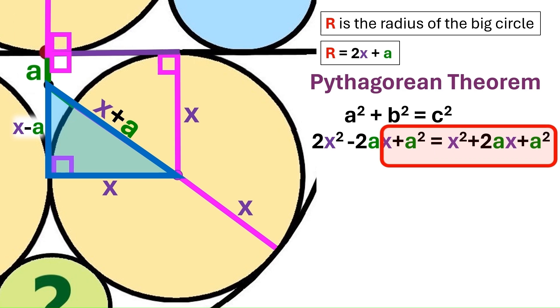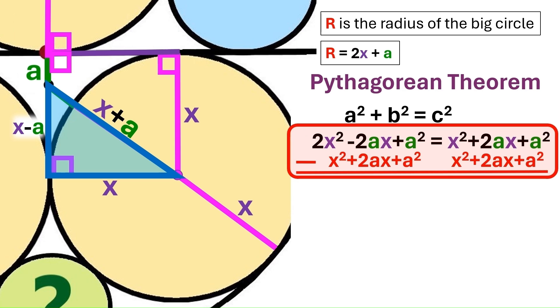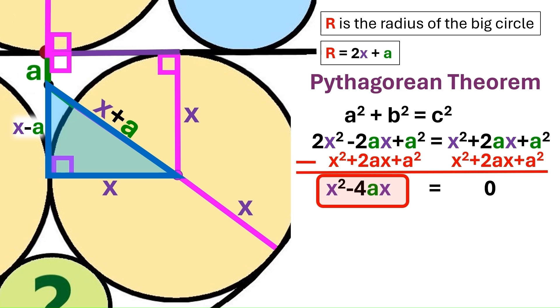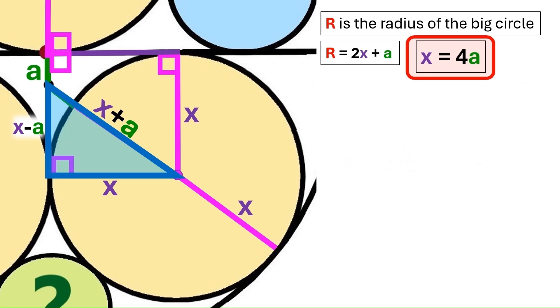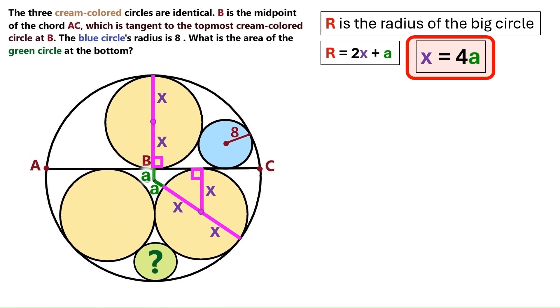Next we subtract this expression from both sides of the equation. And on the right hand side we get a big nice zero. And on the left hand side we get this, which is nice too. Because we can take this minus 4ax to the other side, where it becomes plus. And after dividing both sides by x, we find x equals 4a. Let's keep the super important finding up here, and let's go back to our original diagram.